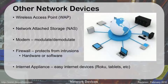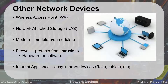Internet appliances are easy internet devices that can be tablets, your home thermostat, web cameras for a security system, or streaming media players like a Roku or Netflix box. These are basically mini computers that do a single function or just a couple of functions.